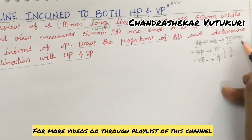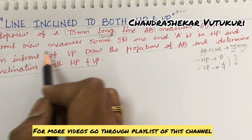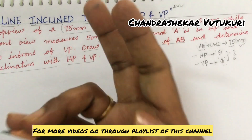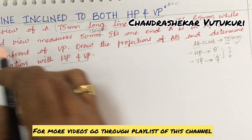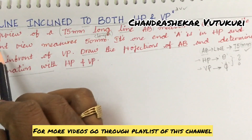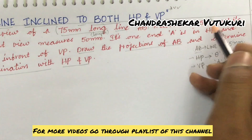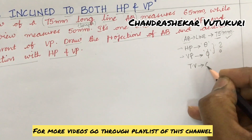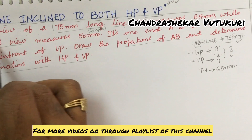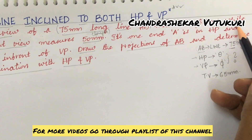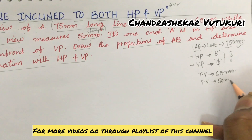Now, what is asked: 75 mm long line is given, and theta and phi are certain data we need to know. While its front view measures 50 mm — there are three things given here. The length of the line is given; the top view measures 65 mm; and the front view, later written as FV, is also given as 50 mm. Please do underline all these terms and do not confuse them.